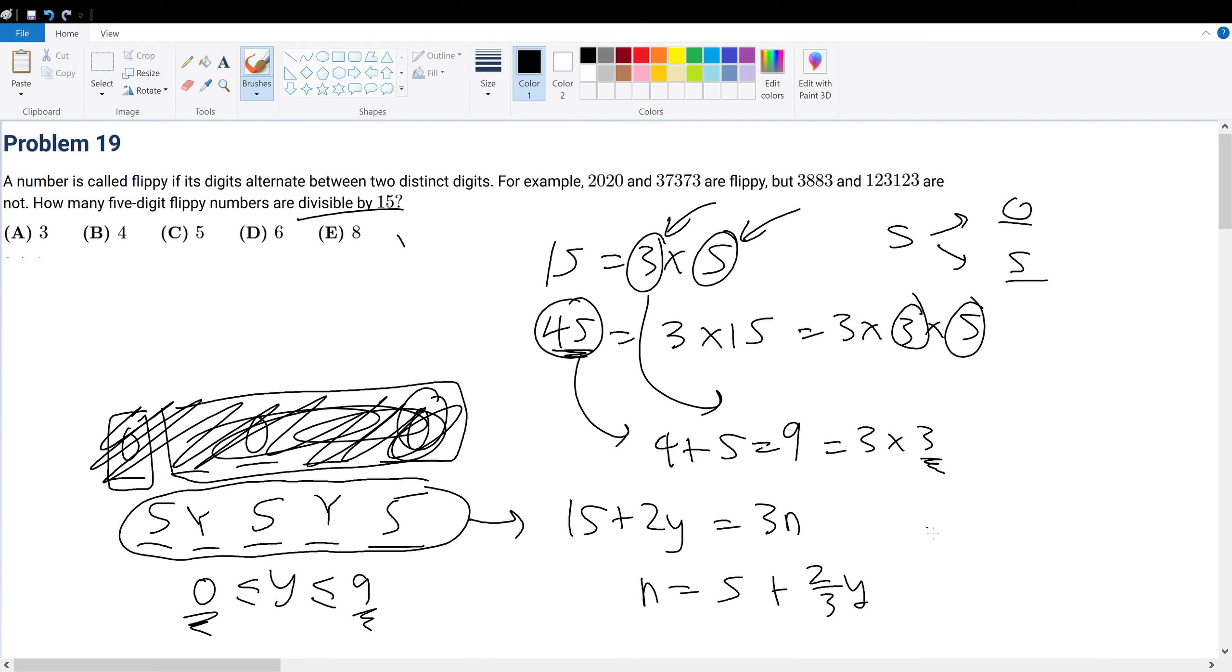When y equals 0, n equals 5, which is a valid n because that's a whole number. So when x equals 5, y can equal 0. When y equals 1, that will not work. We'll get a non-whole number because only when this is a whole number can 5 plus a whole number get you a whole number n.